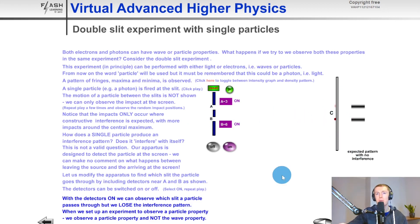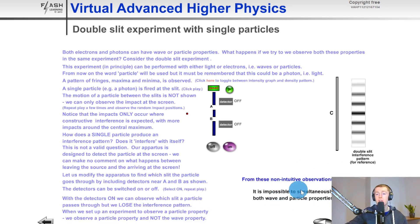So this idea of not being able to observe both wave-like and particle-like properties at once is due to the wave-particle duality. And there's a conclusion here which says that it is impossible to simultaneously measure both wave and particle properties. And this leads on to the idea of the uncertainty principle which we'll see in a future video.